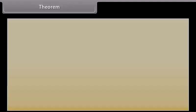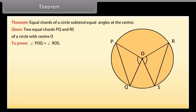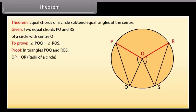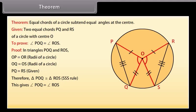Theorem. Let us prove this theorem. Given: two equal chords PQ and RS of a circle with center O. To prove: angle POQ is equal to angle ROS. Proof: In triangles POQ and ROS, OP is equal to OR (radii of the circle), OQ is equal to OS (radii of the circle), and PQ is equal to RS (given). Therefore, by the SSS congruence rule, triangle POQ is congruent to triangle ROS. This gives angle POQ is equal to angle ROS, because corresponding parts of congruent triangles are congruent.